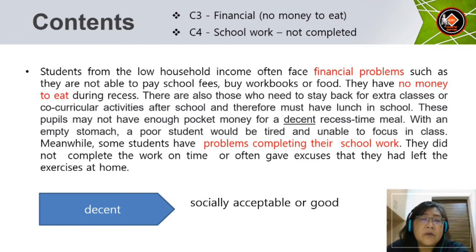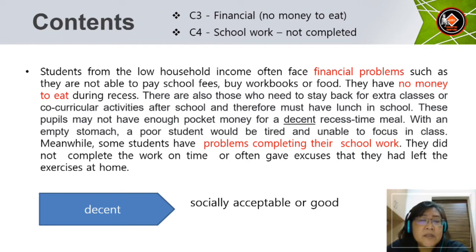Here is another example for Content 3 and Content 4. 'Students from the low household income group often face financial problems, such as not being able to pay school fees, buy workbooks or food. They have no money to eat during recess. Those who stay back for extra classes must have lunch in school but may not have enough pocket money for a decent meal. With an empty stomach, a poor student would be tired and unable to focus in class. Meanwhile, some students have problems completing their school work — they often gave excuses that they had left the exercises at home.' Decent here means socially acceptable or good.